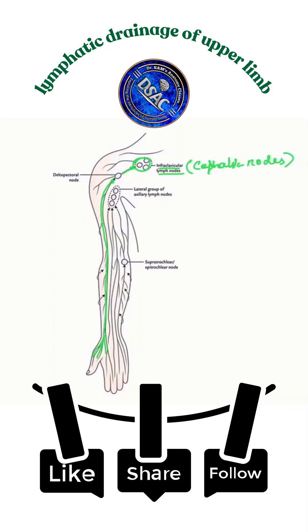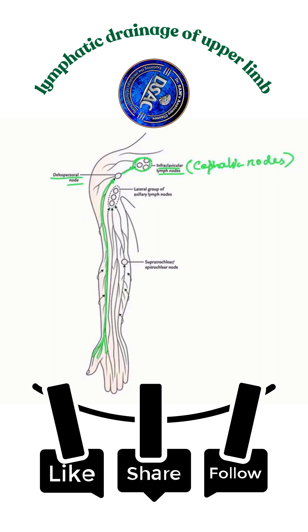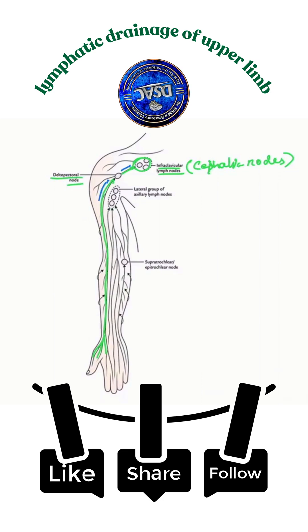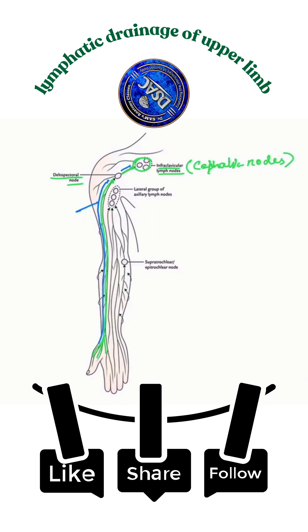The deltopectoral node is present in the deltopectoral groove before these lymphatics pierce the clavipectoral fascia. Remember their course — the lymphatics accompany the entire course along with the cephalic vein.